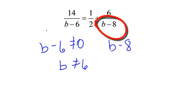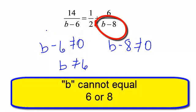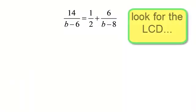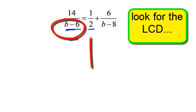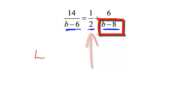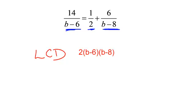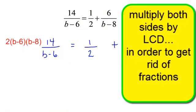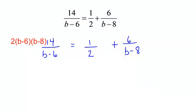b minus 8 cannot equal 0, which means b could not equal 8. What is going to be my least common denominator? How can I get rid of these fractions? Well, I need a b minus 6, I need the number 2, and I also need b minus 8. So my least common denominator will be 2 times b minus 6 times b minus 8. We need to multiply each term by this least common denominator in order to get rid of these fractions.